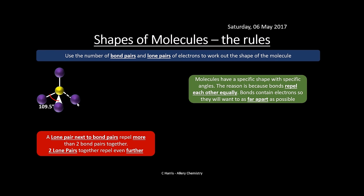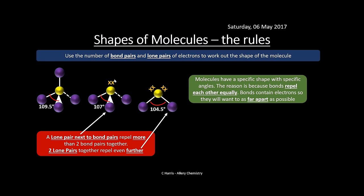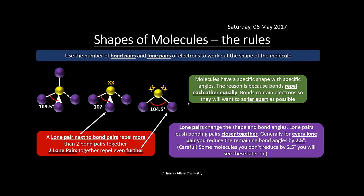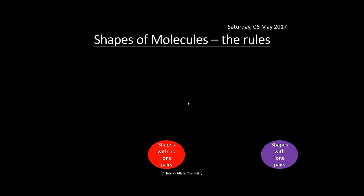With one lone pair, the bond angle decreases because the lone pair repels the bonds closer together. With two lone pairs, the bond angle shrinks even further. As a general rule for tetrahedral-based structures, every time you have a lone pair you reduce the remaining bond angle by 2.5 degrees — though this doesn't always apply where lone pairs cancel out.